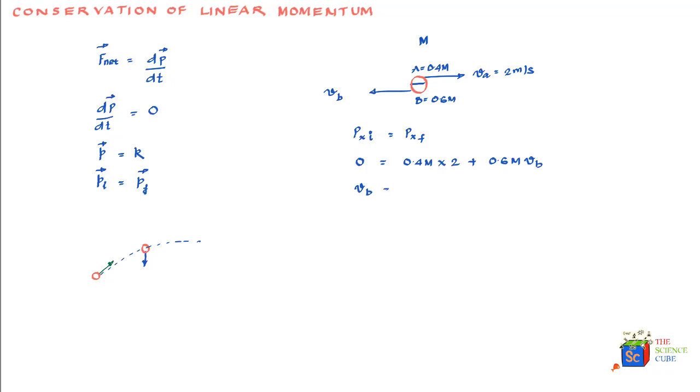v_b equals minus 0.8 divided by 0.6, which equals minus 1.33 meters per second. You can see that the mass m has actually cancelled off, and it's of little consequence. You can also see we've got a negative sign, which shows that part b actually flew in the left direction.